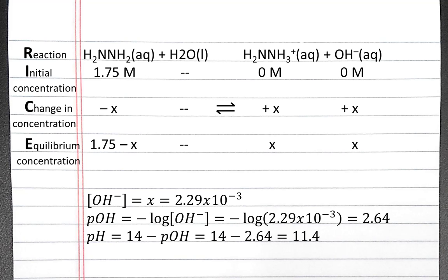We can calculate pH from our pOH value. At 25 degrees Celsius, it will be 14 minus the pOH, which is 14 minus 2.64, or 11.4. So our pH of our 1.75 molar hydrazine solution in water is 11.4.